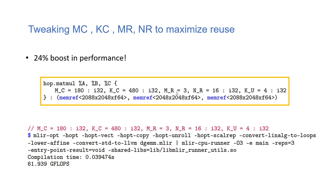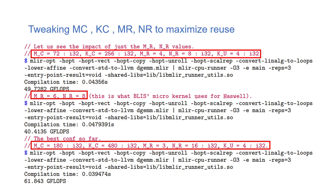With the parameters MR=3 and NR=16 that fit the particular hardware architecture, we get 61.9 gigaflops — the highest result the author achieves in this paper. Varying MR and NR: with 4 and 8 gives 49 gigaflops, with 6 and 8 drops to 40 gigaflops for a BLIS-matched configuration, and with 3 and 16 we get 61.8 gigaflops — basically the same as before.